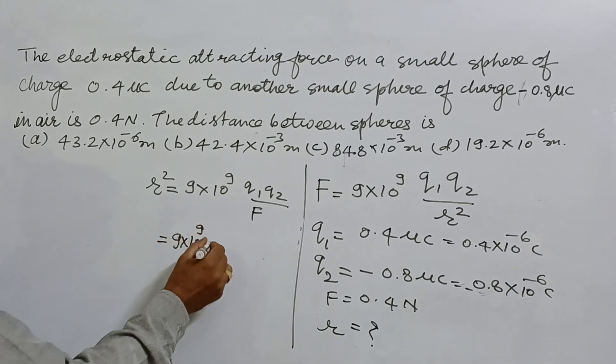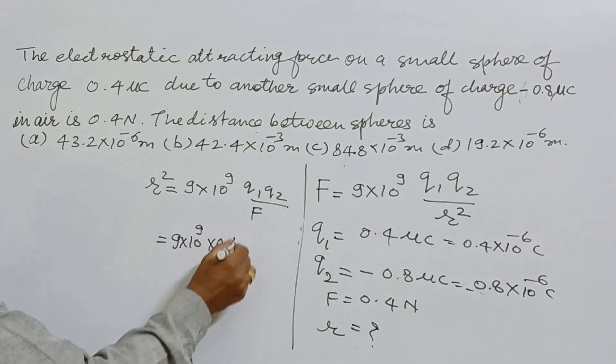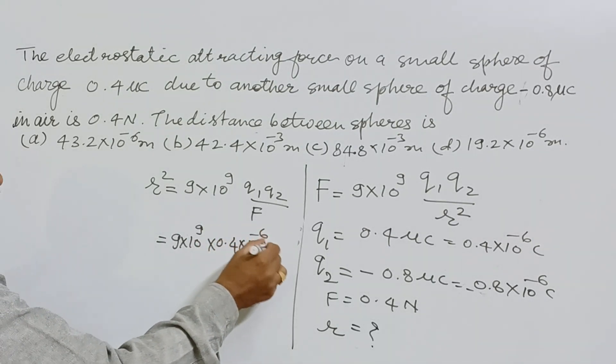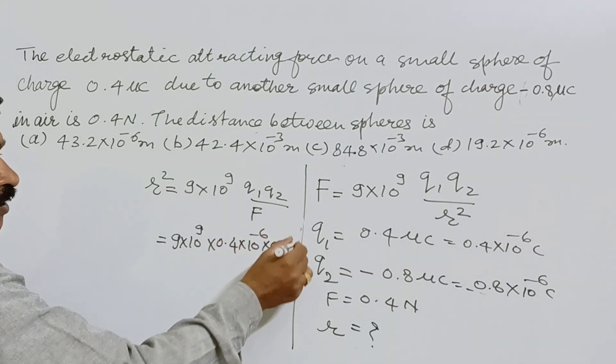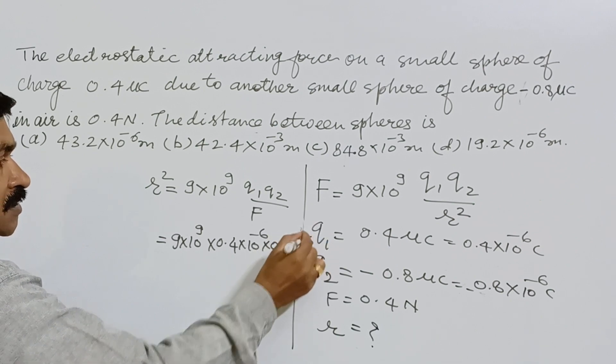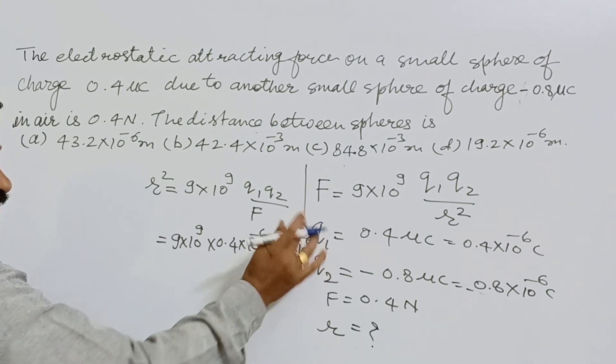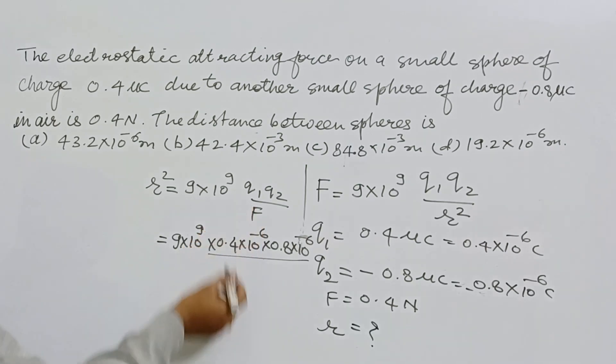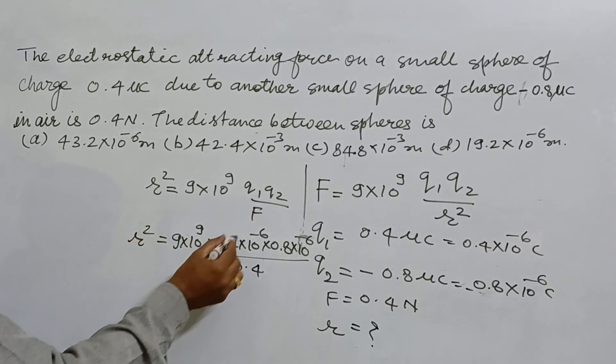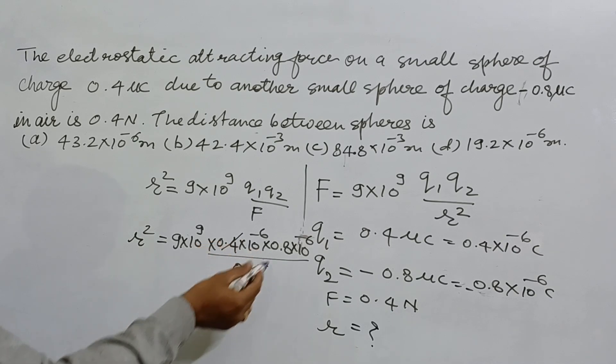...× 0.8×10⁻⁶ divided by F which is 0.4. So here we have r². This 0.4 and 0.4 cancel, 9×0.8 gives 7.2...